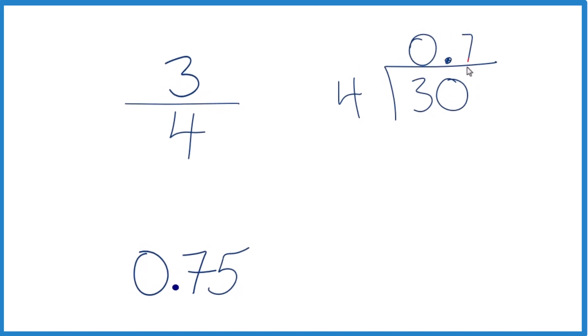So 7 times 4, that's 28. We subtract and get 2. 4 doesn't go into 2, but if we move over a decimal point, we could make this 20 and 5 times 4, that's 20. We subtract, no remainder.